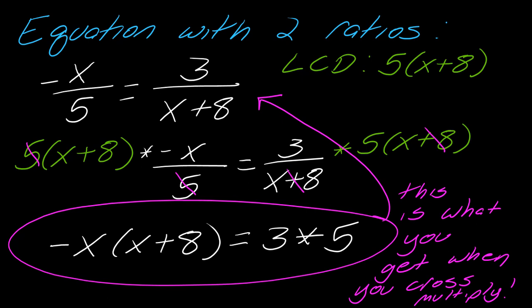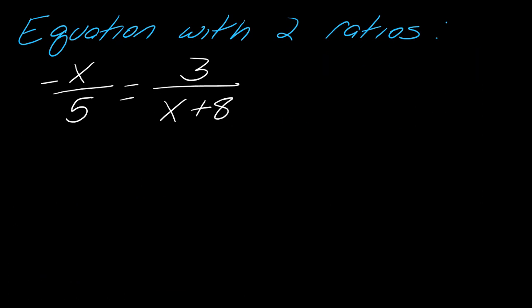Remember this. Remember this result. Let's say now that I want to cross multiply. I'm starting over and now I'm saying I don't want to do the LCD, I want to do this cross multiplying. So if I do that, I multiply across each way. This would be what I'm left with, right? Negative x times (x+8), and 3 times 5. So it's the same thing.